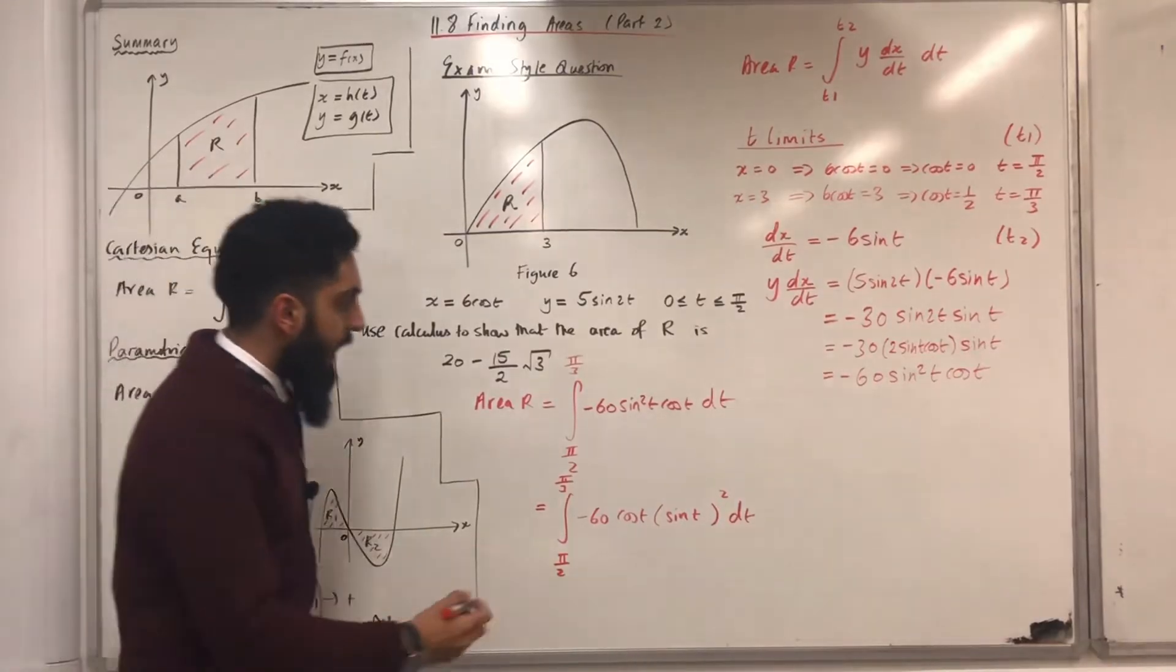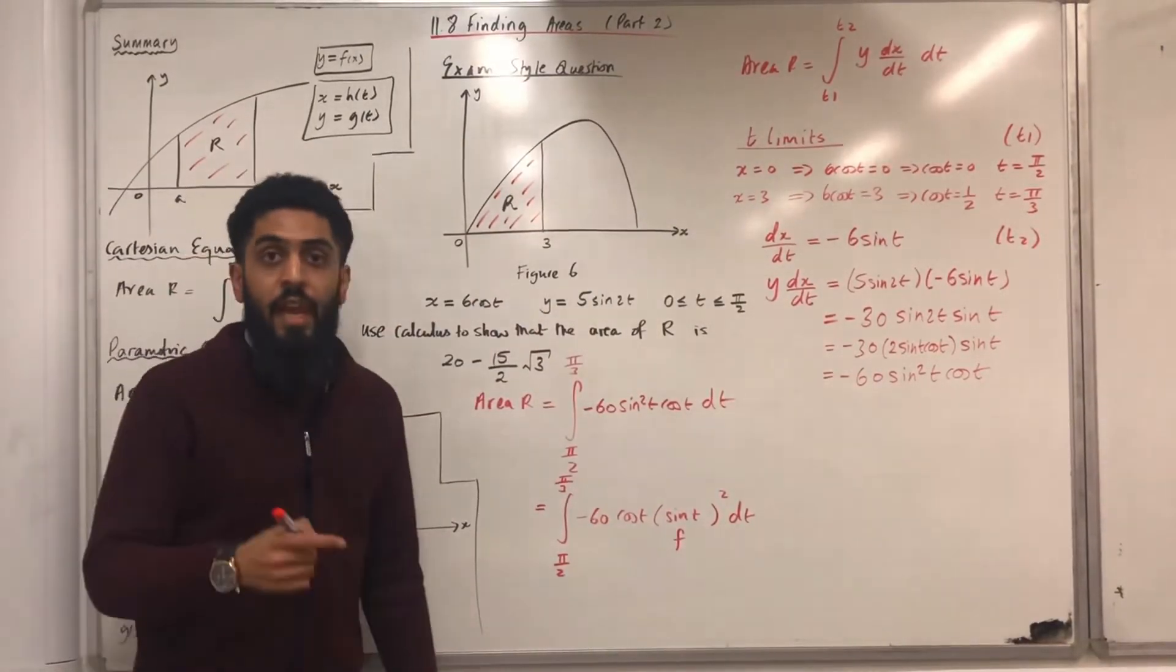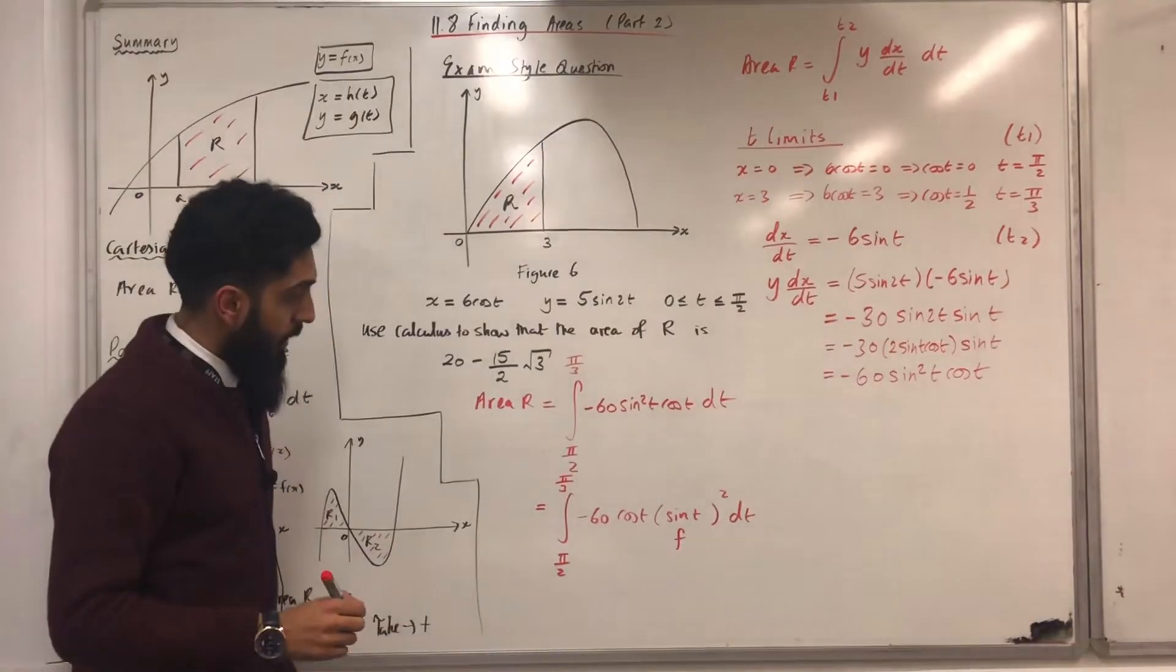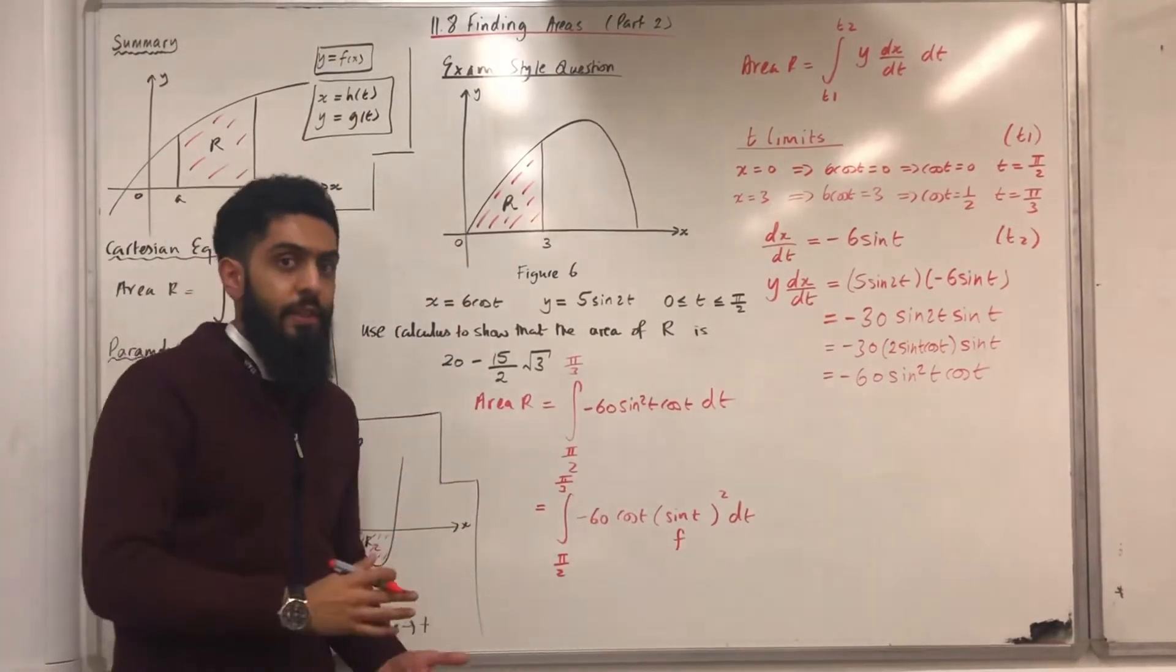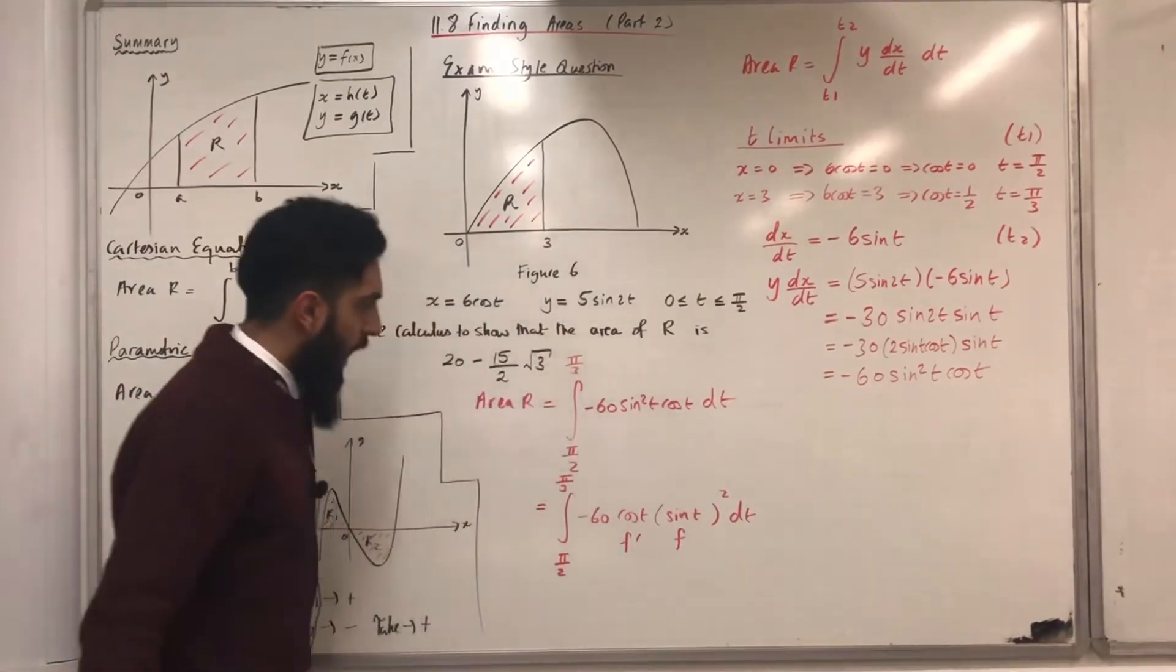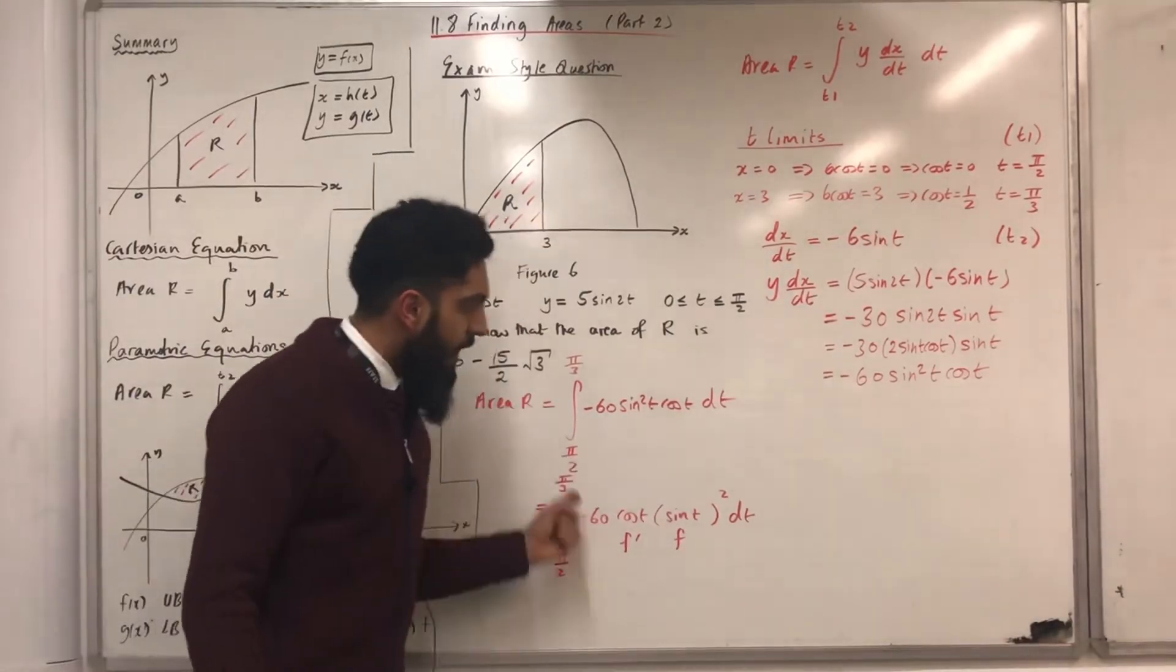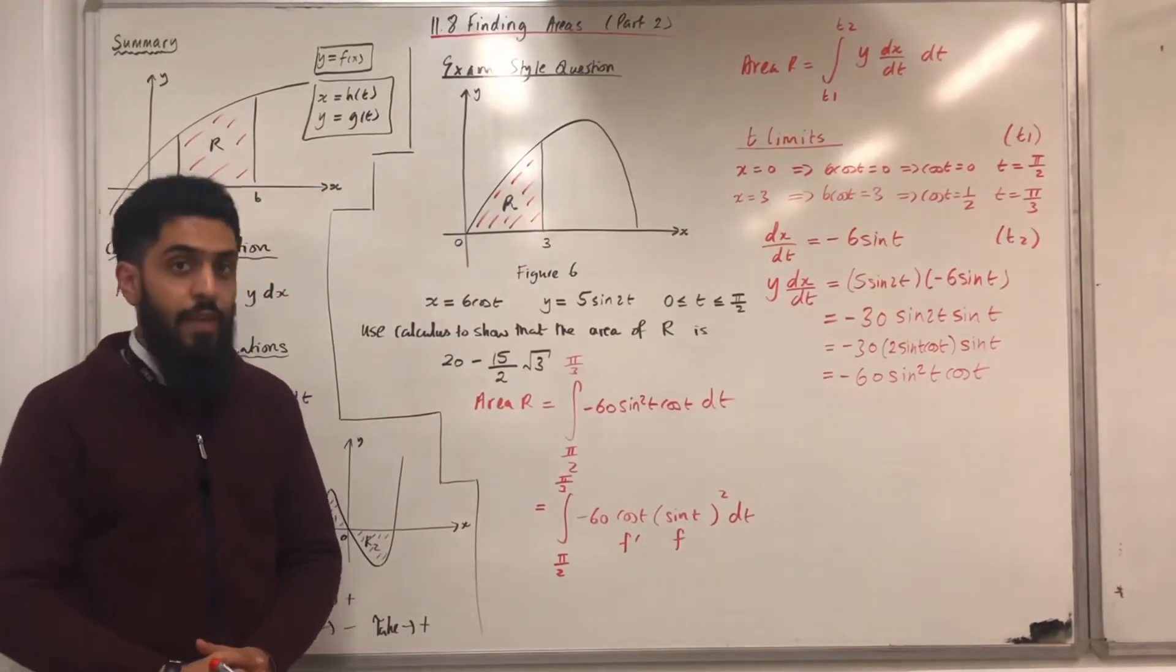Okay, if I take my function f to be sin and I differentiate f to give me f dash, that's the same as differentiating sin, which is cos. And I've got a cos here, which represents f dash. I've got an f dash in front of f. Therefore, this particular integral follows one of the forms of the reverse chain rule.